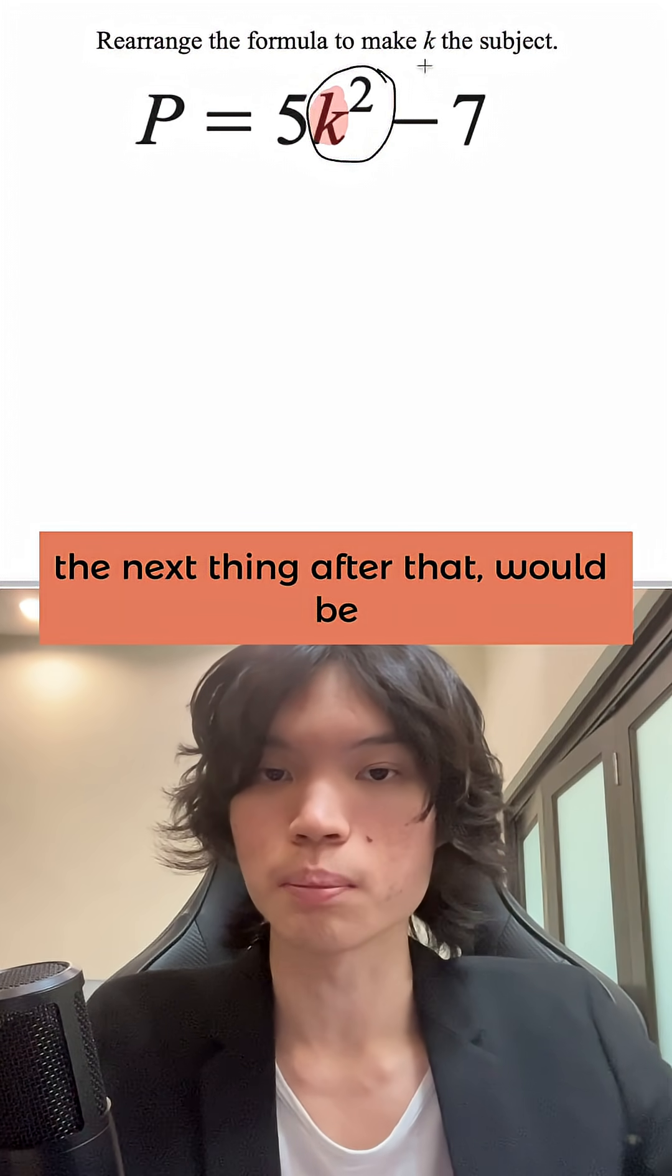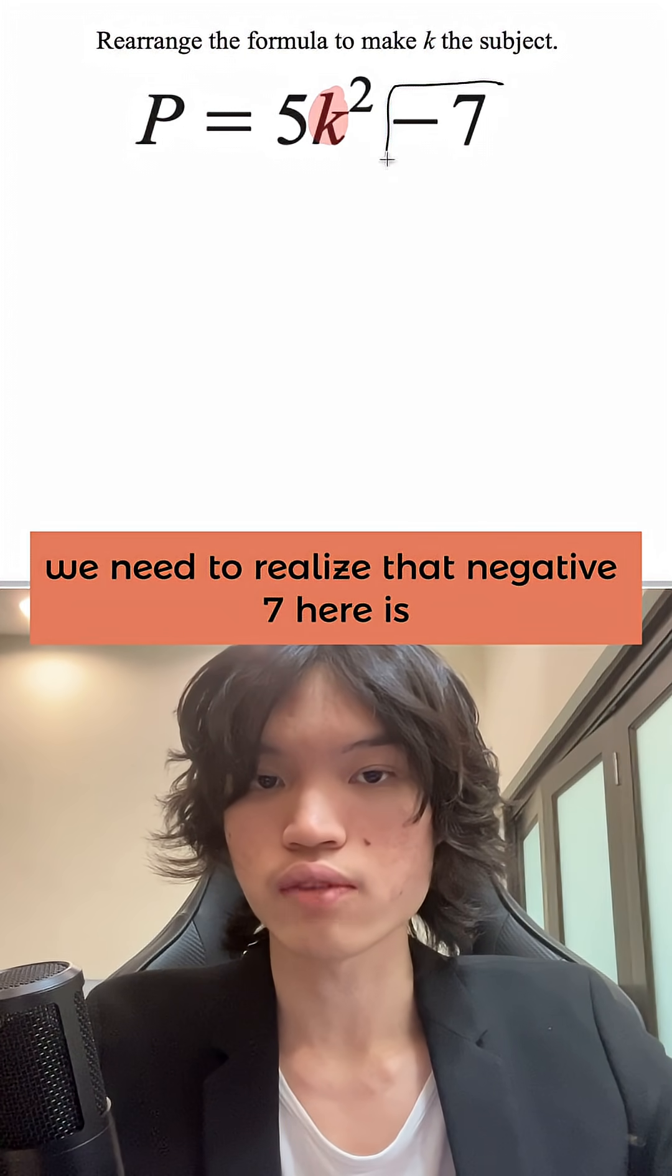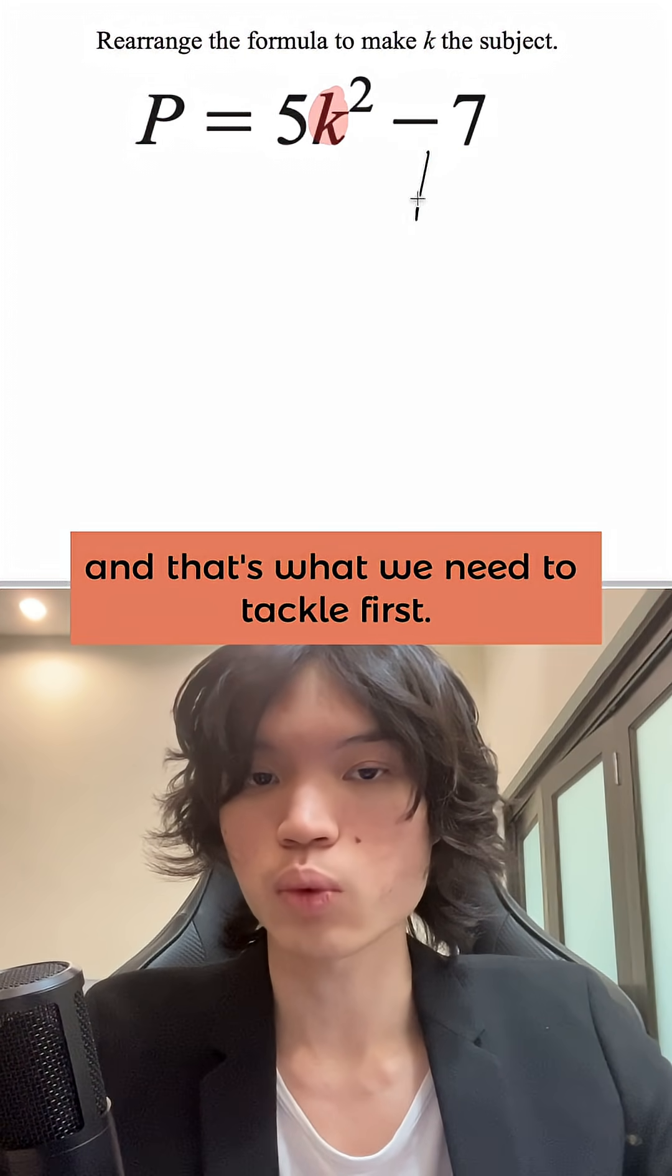The next thing after that would be the multiplication here by 5, so 5k squared subtract 7. We need to realize that negative 7 here is way on the outside, and that's what we need to tackle first.